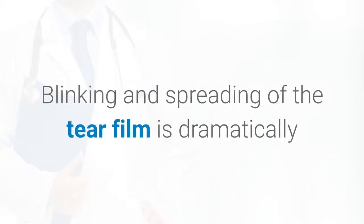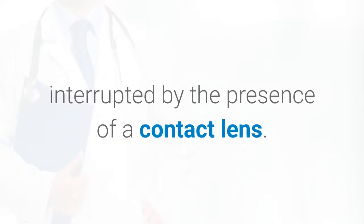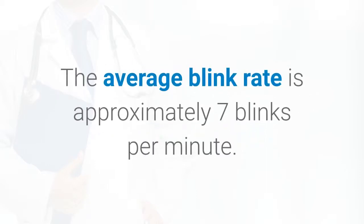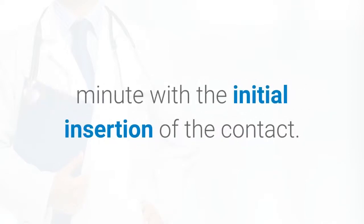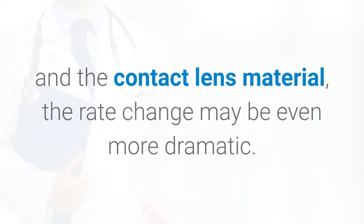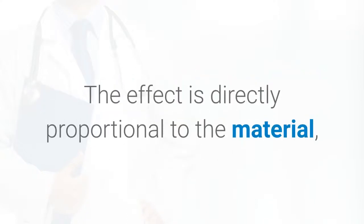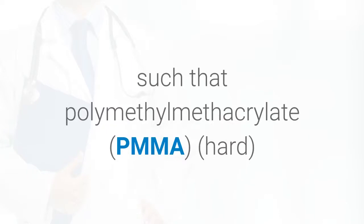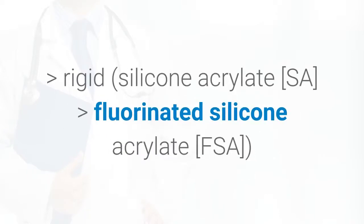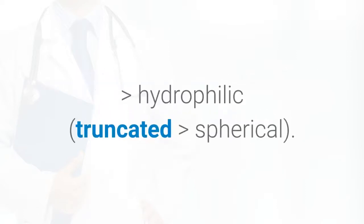Blinking and spreading of the tear film is dramatically interrupted by the presence of a contact lens. The average blink rate is approximately 7 blinks per minute. This increases to approximately 18 to 20 blinks per minute with the initial insertion of the contact lens. Based on the comfort level of the patient and the contact lens material, the rate change may be even more dramatic. The effect is directly proportional to the material, such that PMMA hard is greater than rigid silicone acrylate, which is greater than fluorinated silicone acrylate (FSA), which is greater than hydrophilic truncated, which is greater than spherical.